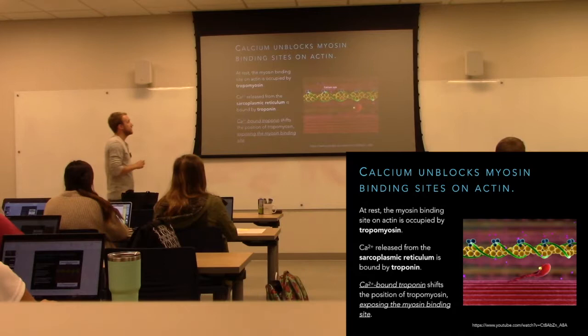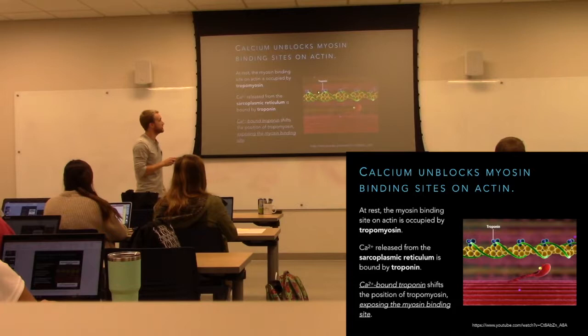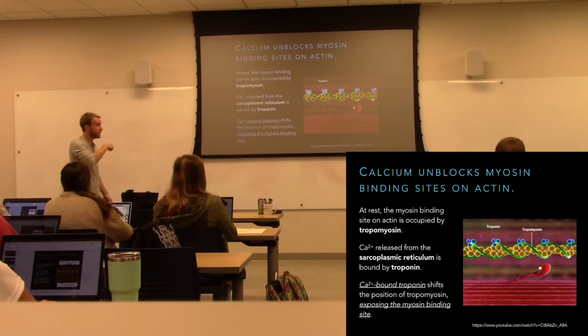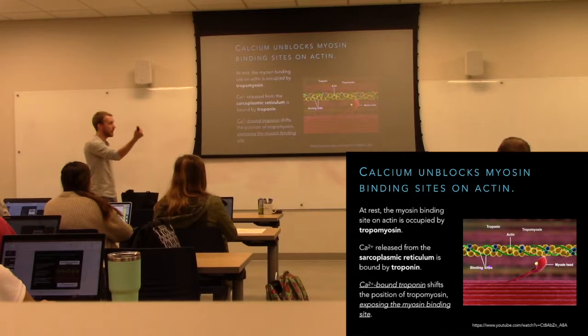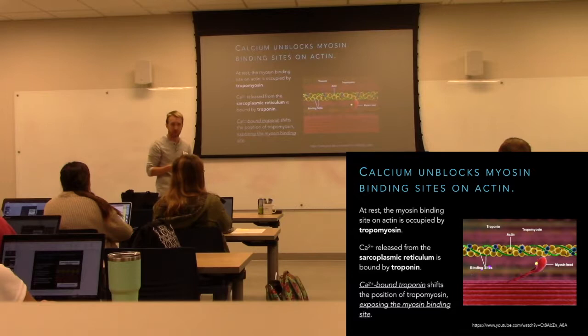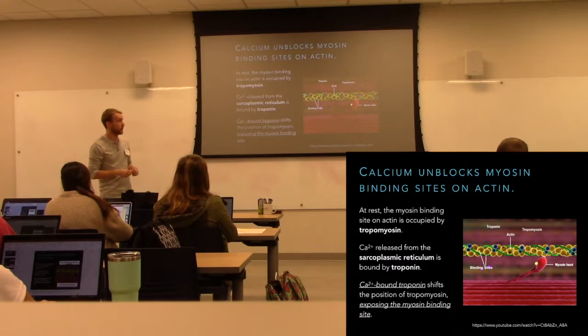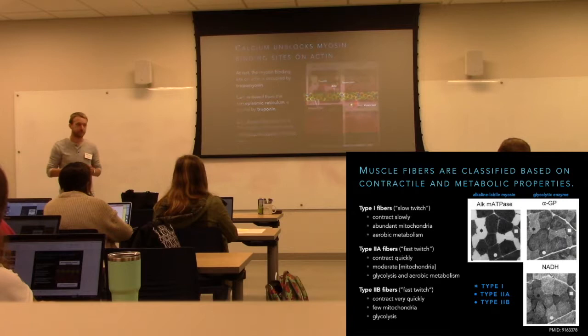In cartoon format: the green tropomyosin filaments wrap around, hiding those myosin binding sites, with troponin attached. When we have calcium influx, troponin binds calcium, changes shape, and pulls tropomyosin out of the way. Now myosin binding sites are exposed. Myosin is always flopping around — kind of like the inactivation gate of voltage-gated sodium channels — but it doesn't have anything to stick to until tropomyosin moves. Then it can bind, and myosin power strokes take place, sliding filaments 10 nanometers at a time.